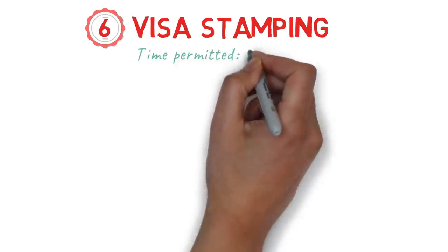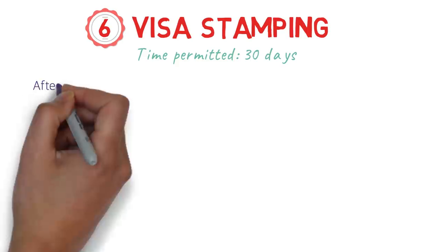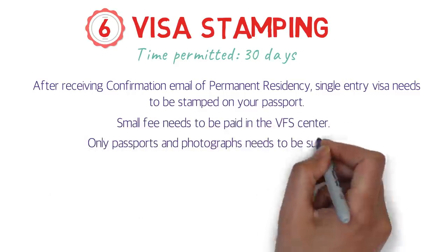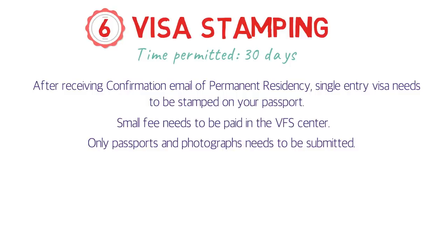Step six is visa stamping — the final step. After you receive the email from IRCC confirming your PR, you are given 30 days. Within those 30 days, you must go to the VFS office and submit a few documents. A single-entry visa needs to be stamped on your passport; a small fee is paid at the VFS center, and your passport and photographs must be submitted along with the printout of the confirmation email from IRCC.